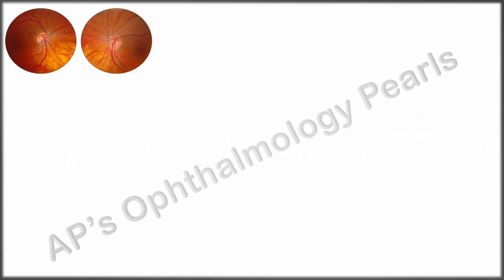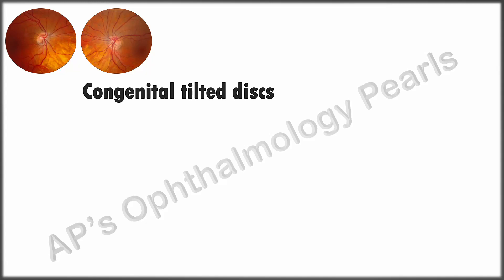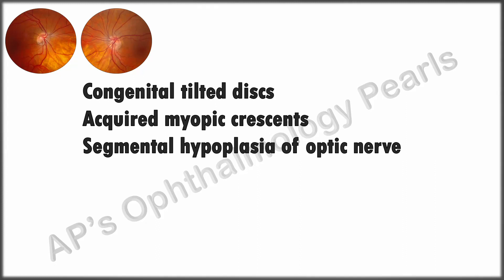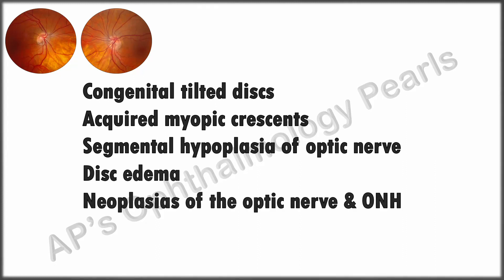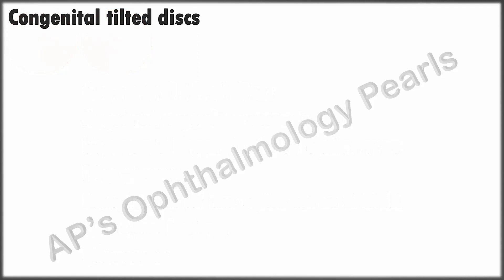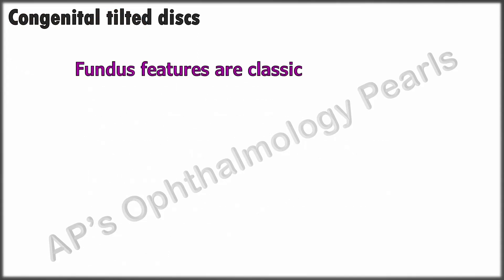This condition is most typical for that of a tilted disc with situs inversus. Other conditions in the differential diagnosis are acquired myopic crescent, segmental hypoplasia of the optic nerve, disc edema, neoplasia of the optic nerve and optic nerve head, chiasmal lesions, and glaucoma. Points in favor of a tilted disc are the classic fundus features and the presence of situs inversus.